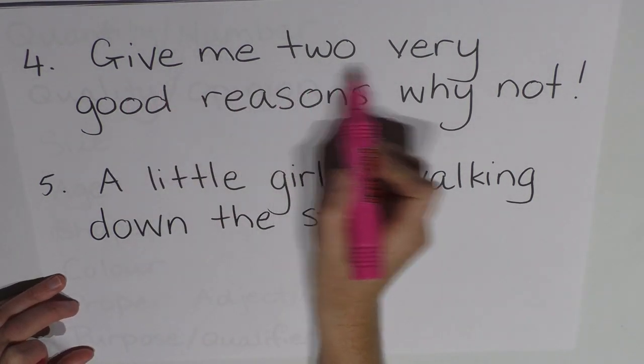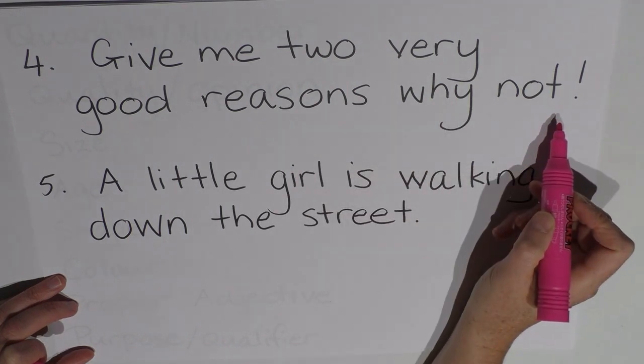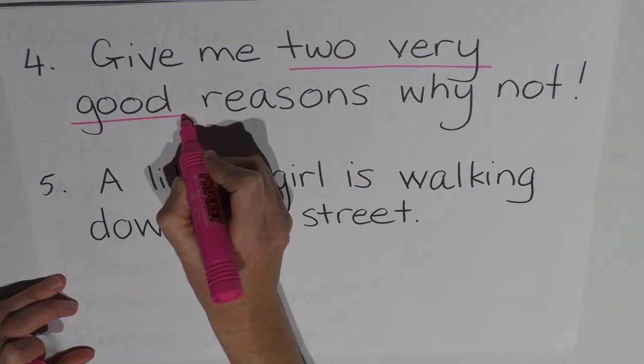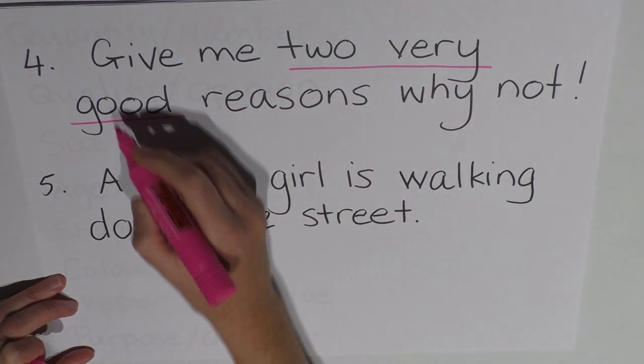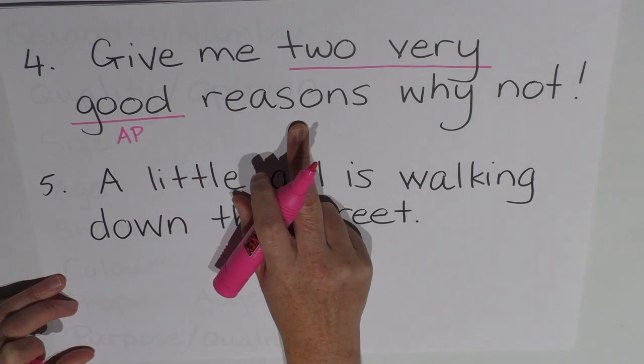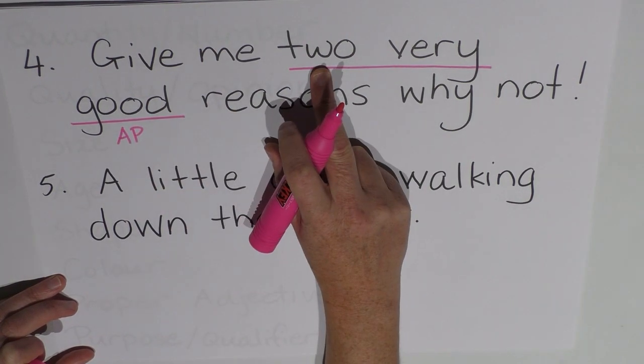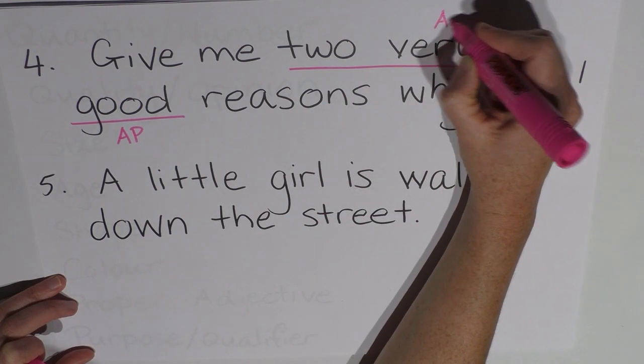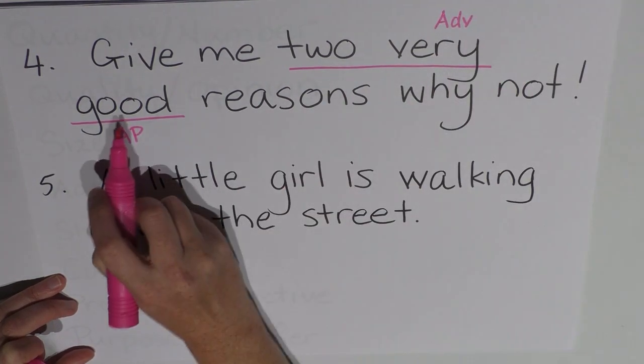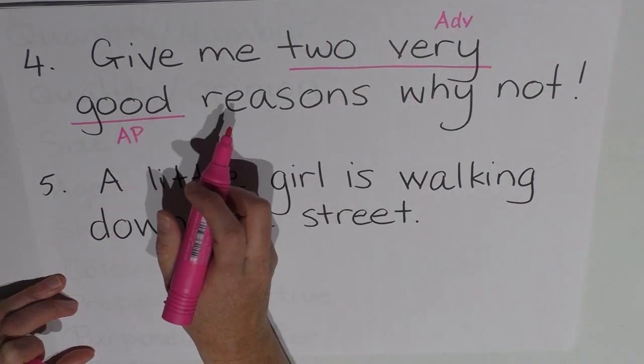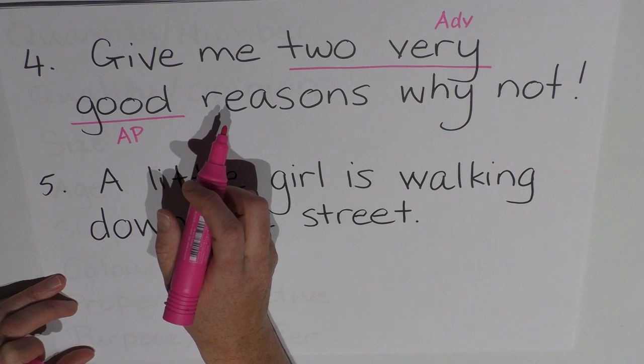Give me two very good reasons why not. So the adjective phrase here is two very good. And of course, that two very good, the adjective phrase is all describing the reasons. Once again, we have our numerical two. Very is the adverb or modifier, which is actually modifying good. Okay, it's not very reasons, it's very good reasons. So that's all part of the adjective phrase.